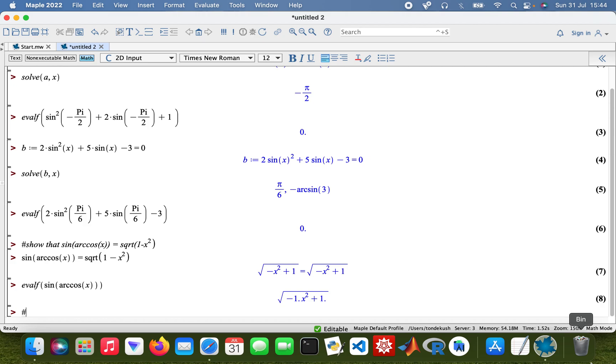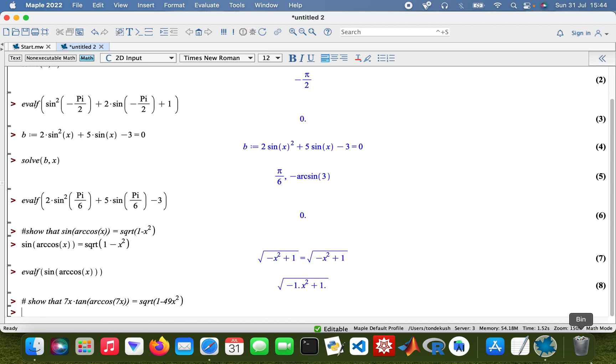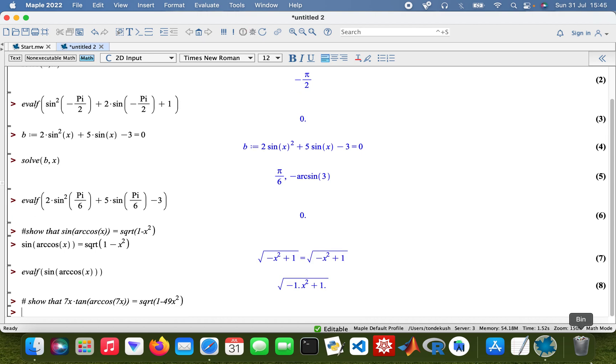And then I also need to show another trig function. Show that sin(7x) equals the square root of 1 - 49x².